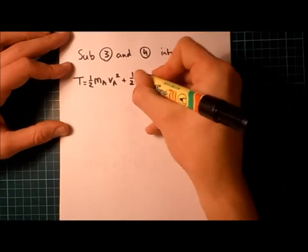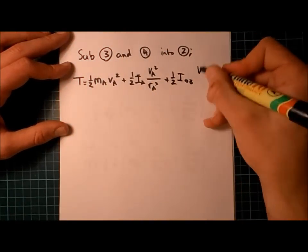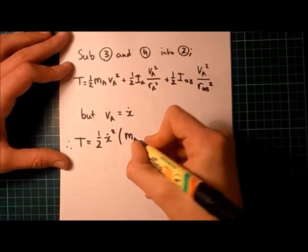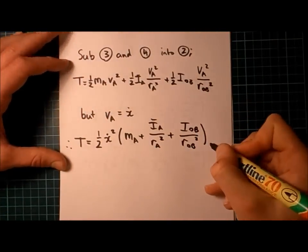So, substituting all those kinematic relationships in, we can finally find an expression for our kinetic energy, all in terms of V A, or x dot.